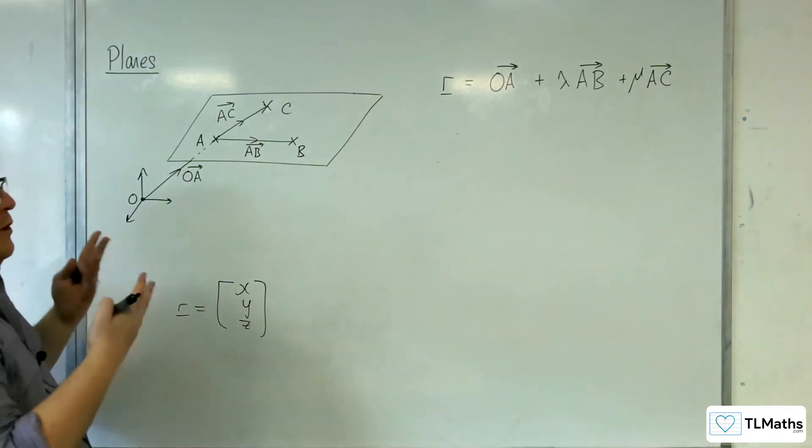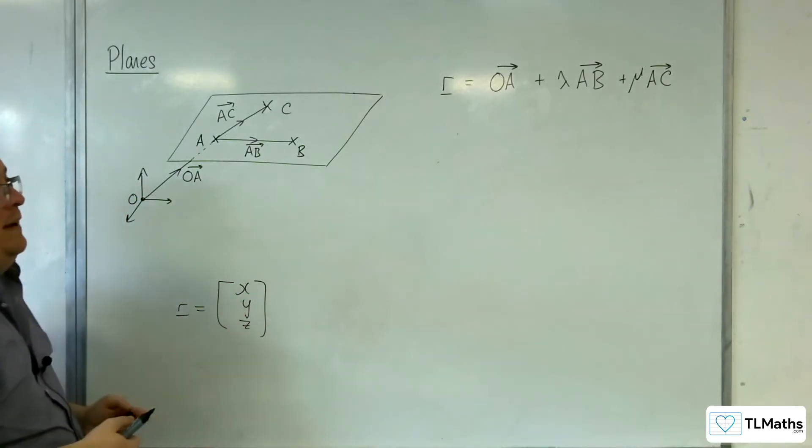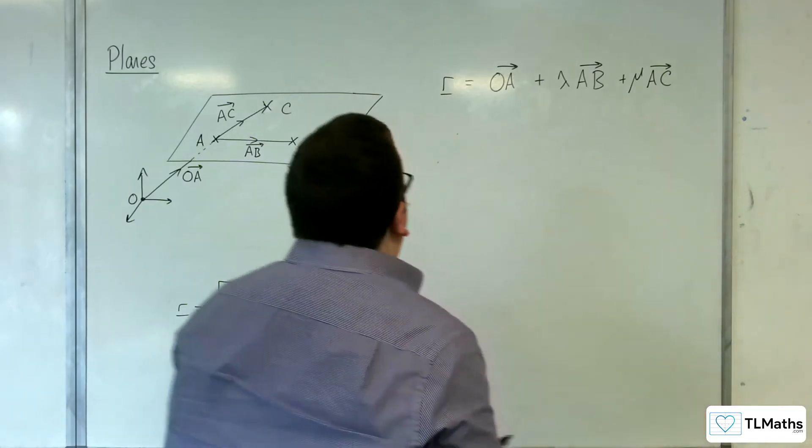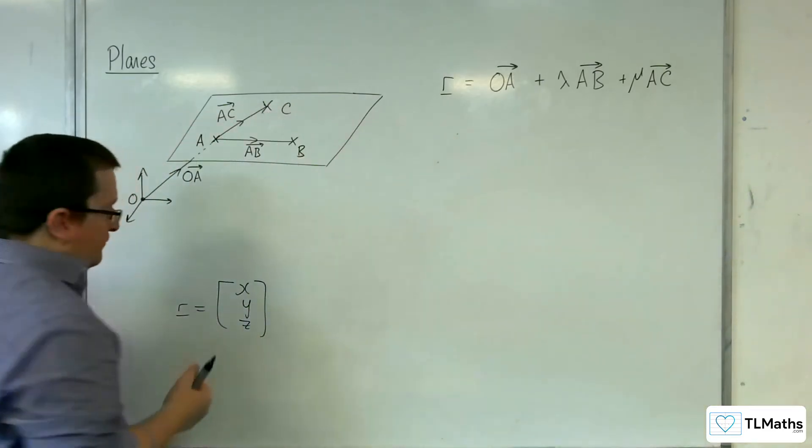So I need AC to be non-parallel to AB, and therefore as long as A, B, and C lie on the plane, this would be the vector form, the vector equation of the plane.